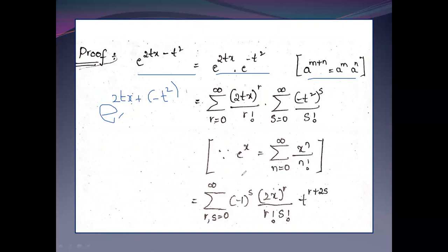We apply the formula: e^x equals the sum from n equals 0 to infinity of x^n divided by n factorial. Replacing x with 2tx, we get the sum from r equals 0 to infinity of (2tx)^r divided by r factorial. And e^(−t²) gives the sum from s equals 0 to infinity of (−t²)^s divided by s factorial.